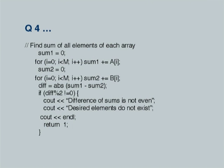I now proceed to find the sum of each array — all elements. I start with sum1 equal to 0 and add up all elements of A with sum1 plus equal to this. Similarly, all elements of B, sum2 equals this. Now I calculate the difference between the two and take the absolute value. It so happens that if the difference is an odd number, I will never be able to find two elements X and Y as required. Is everybody convinced about this fact?